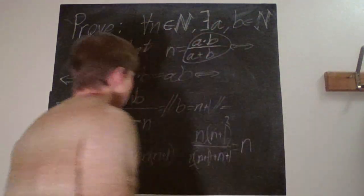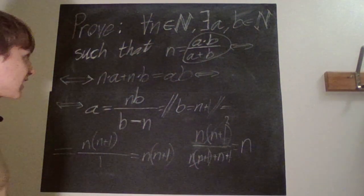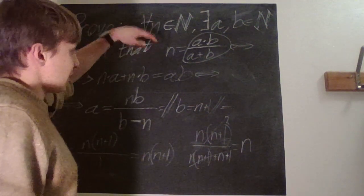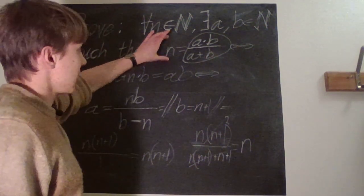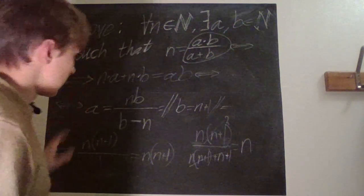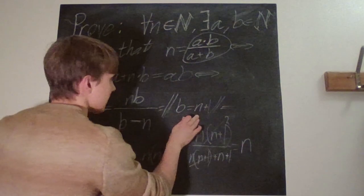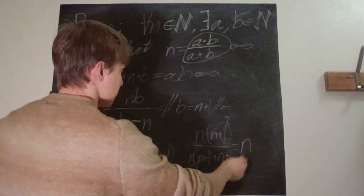So essentially what we're saying here is that we prove this by saying that for any given n, we just let a be equal to this and let b be equal to this, and then it always works out.